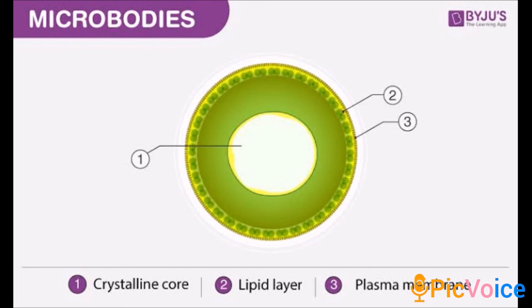Microbodies are membrane-bound, minute vesicle-like round structures that contain various enzymes. They are very small, round structures that speed up cellular activities and are present in both plant and animal cells.